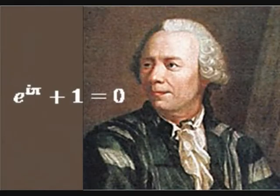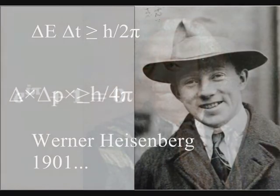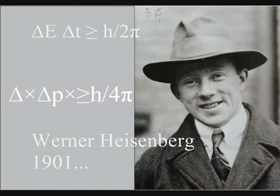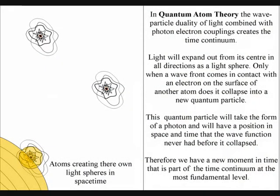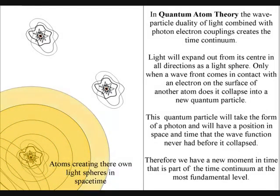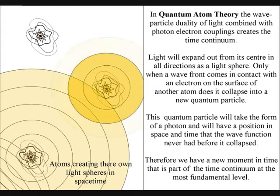This theory is based on the mathematics and physics of some of the greatest minds the world has ever seen. It will explain a universal process of energy exchange, formed photon by photon, at the quantum level of the atoms, by the wave-particle duality of light. This forms a dynamic process of spherical symmetry forming and breaking.